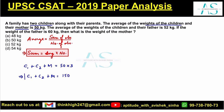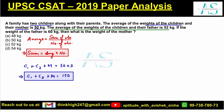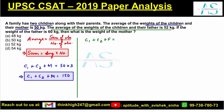Now let's use another piece of data. The average of the weights of the children and their father is 52. So child 1 plus child 2 plus father equals 52 into 3, which gives us child 1 plus child 2 plus father equal to 156.